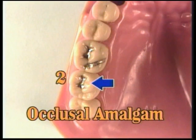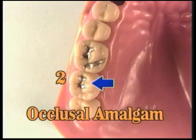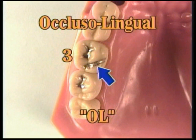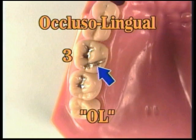Let's take a moment to review the process of charting restorations in teeth. The names of the surfaces of teeth are used to describe restorations, and each tooth surface included in the restoration is used to describe and chart it.